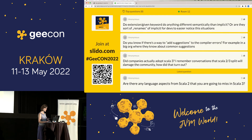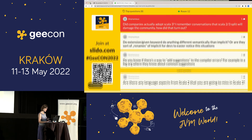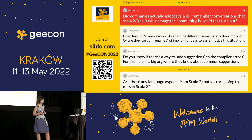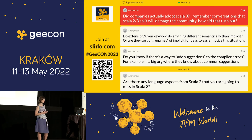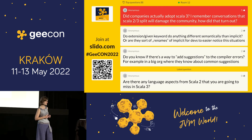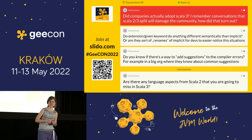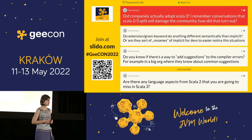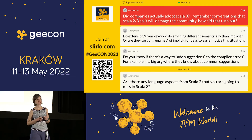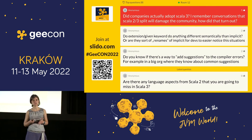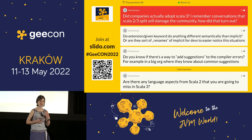Q&A: Did companies actually adopt Scala 3? I remember conversations that the Scala 2 and 3 split would damage the community — how did that turn out? I don't see the community too damaged right now. As for actual production adoption, I would say that's still work in progress. I have seen some projects being migrated but my own project hasn't migrated yet.